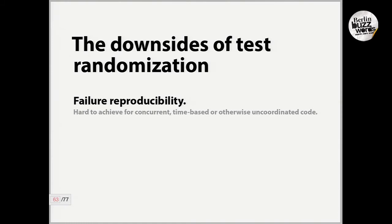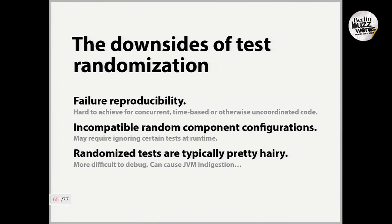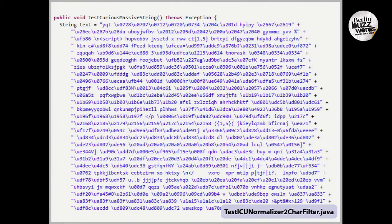What are the downsides of randomizing tests? First, sometimes it's really hard to achieve reproducibility, especially with tests that rely on multiple threads with race conditions that are time-based. Second, there may be some incompatible random component configurations which you'll have to ignore — some component configurations just last forever or don't work at all, and we just assume-ignore them at runtime. And finally, those randomized tests are pretty hairy — you try to debug something with random input like a parameter, and it's difficult to somehow capture the sanity in this randomized chaos.